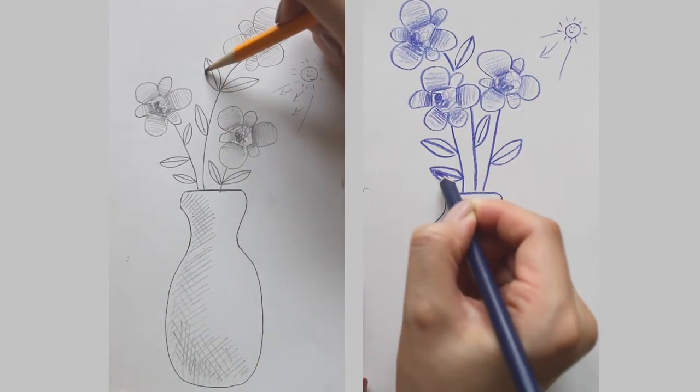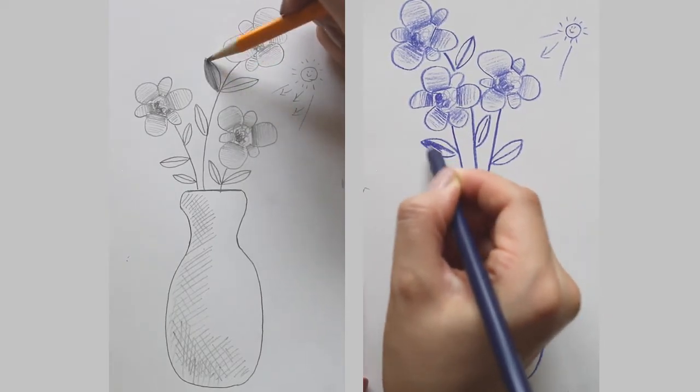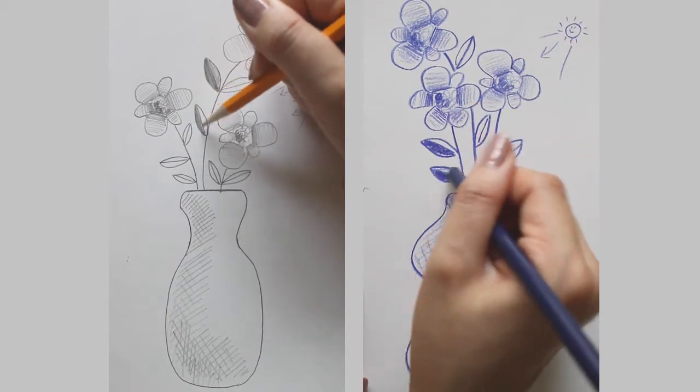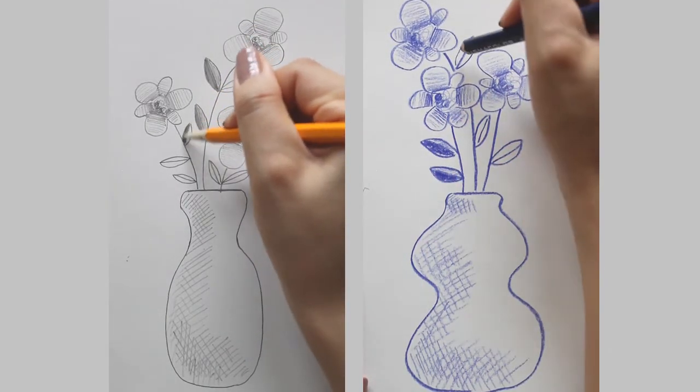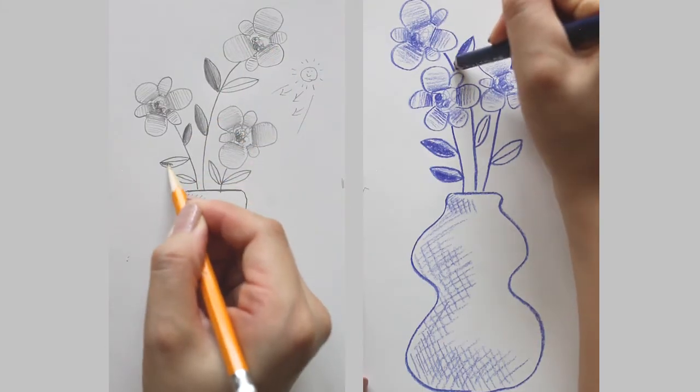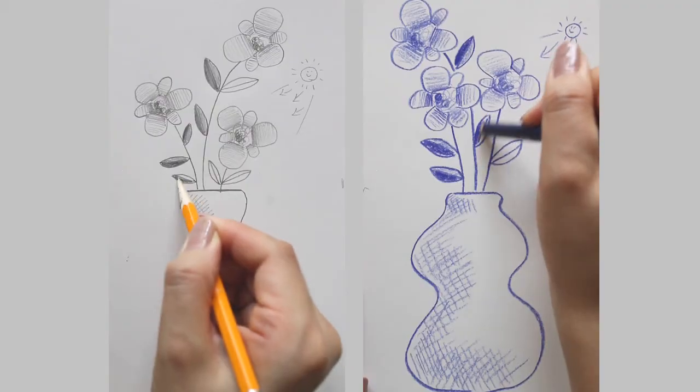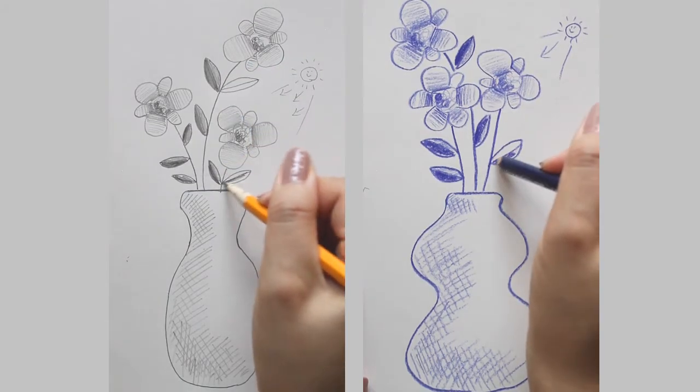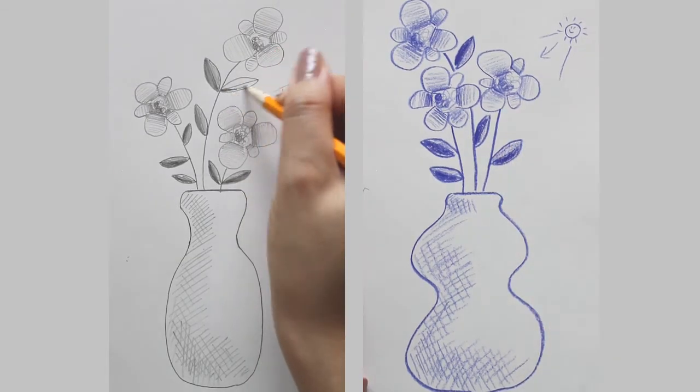For each of the leaves, evenly shade a dark tone on the side of the leaf that's farther away from the light source. I'll let you be the judge on whichever should be darker. Whichever side you decide on, I believe, is the best decision. Then evenly shade a light tone on the opposite side.